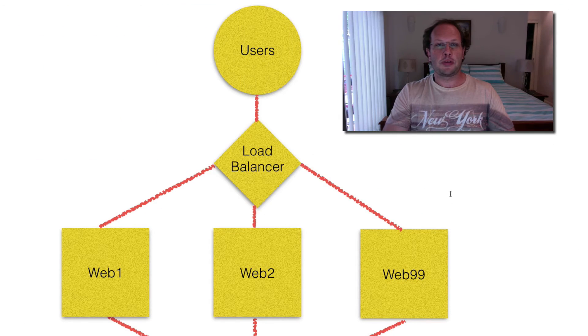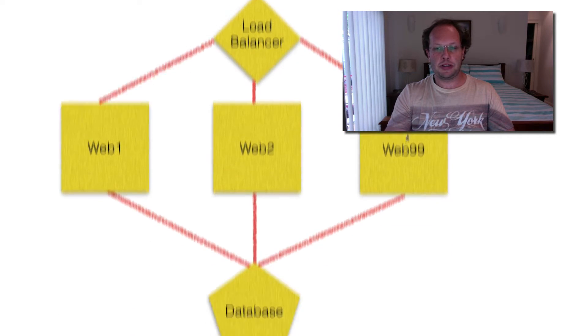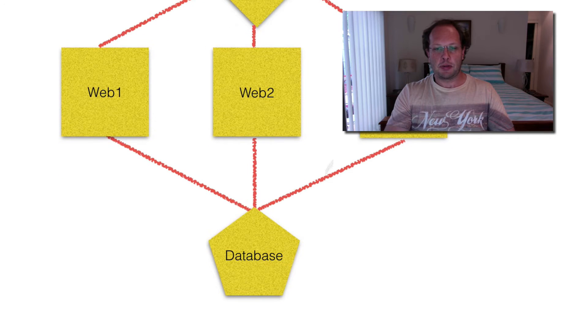This diagram shows the flow of information. You have a website user — their request will come into the load balancer and that will distribute it to one of the web servers that are behind it. The web servers might get some information from the database.